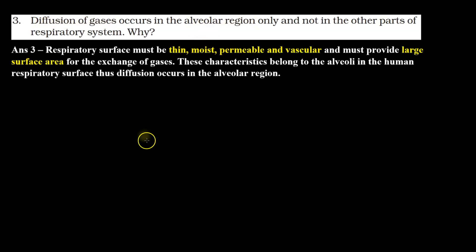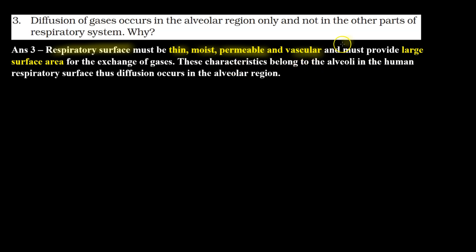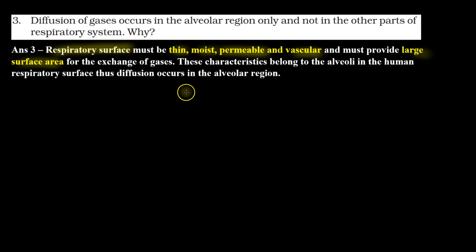Let's check the answer. In the respiratory system, the diffusion of gases requires some characteristics — we call it the respiratory surface. The surface should be thin, moist, permeable to gases, vascular, and must provide a large surface area for exchange. These characteristics are only present in the alveolar region, so the diffusion of gases occurs in the alveolar region.